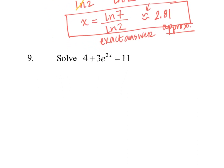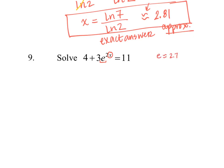We have one more exponential equation. All of these are exponential equations because the variable is in the exponent. This one looks a little weird because we see the e, but remember e is about 2.71 — it's just a number. Before trying to make bases match, I have some other things happening: a 4 and a 3. I want to isolate that exponential expression first. To make the 4 go away, I subtract it from both sides, leaving 3e to the 2x equals 11 minus 4, which is 7. Then I divide by 3 because it's being multiplied, so now e to the 2x is alone.